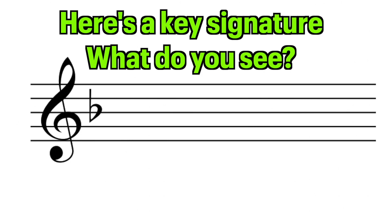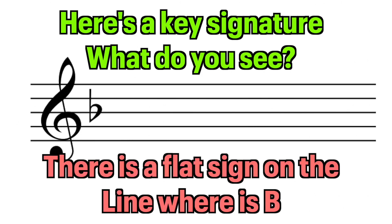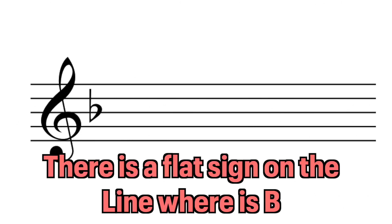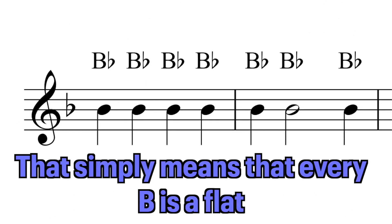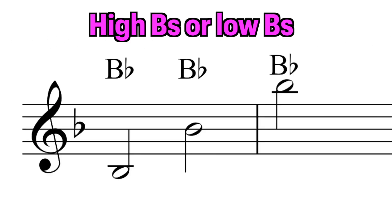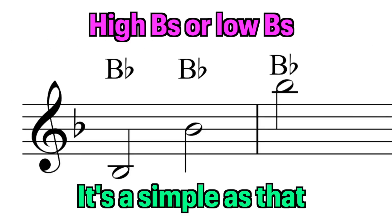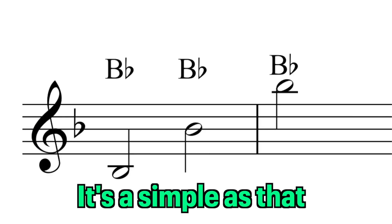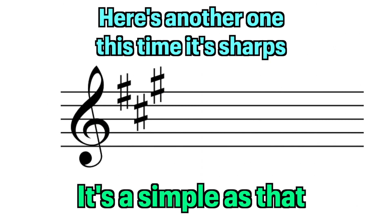Here's a key signature, what do you see? There is a flat sign on the line where it's B. That simply means that every B is a flat — high B's or low B's, it's as simple as that.